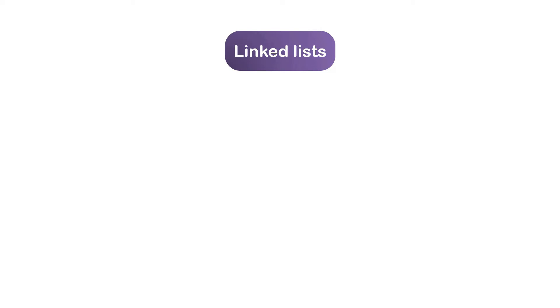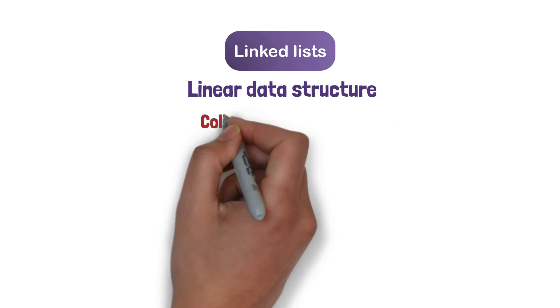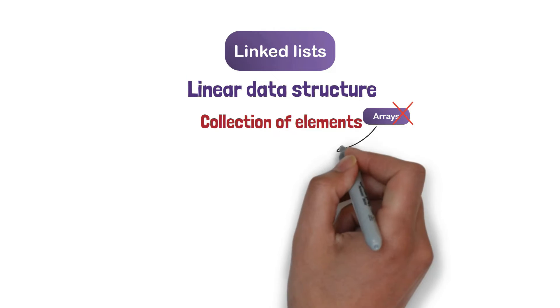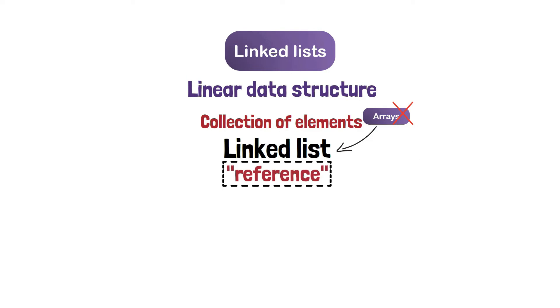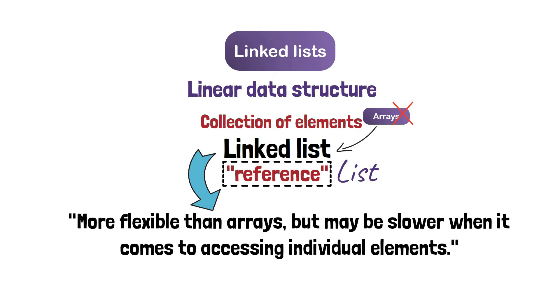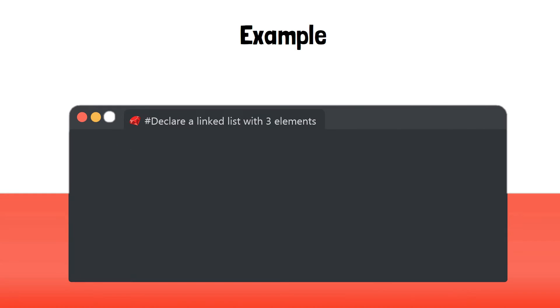Linked Lists. A linked list is a linear data structure that stores a collection of elements, but unlike arrays, each element in a linked list contains a reference to the next element in the list. Linked lists are more flexible than arrays, but may be slower when it comes to accessing individual elements. Here's an example of how you might declare a linked list in a programming language like Python.